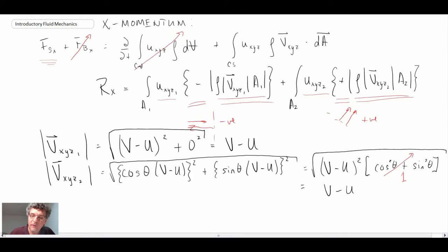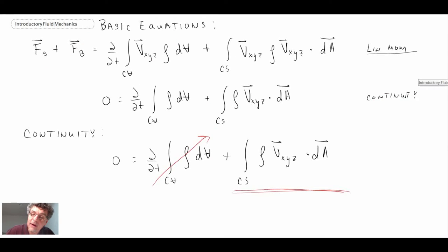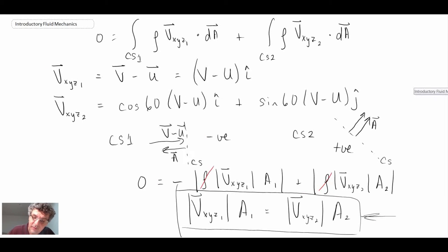When we go through this, what we find is that the magnitude of the velocity on the inlet and on the exit control surface is v minus u. The significance of that, if you recall back to the end of the last segment, we were dealing with continuity and we came up with this expression here. So if we plug those values into this expression, what we find is A1 is equal to A2.